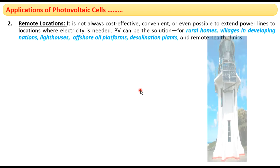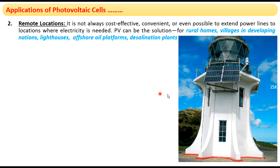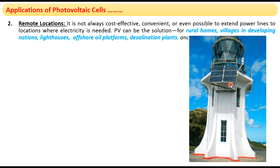Another application is lighthouses. Lighthouses are generally very tall and it is impossible to extend power lines to them. So photovoltaic cells are the best alternative. You can see in the picture a lighthouse fitted with a solar panel which supplies power to it.